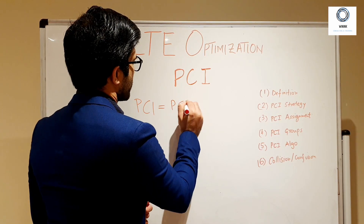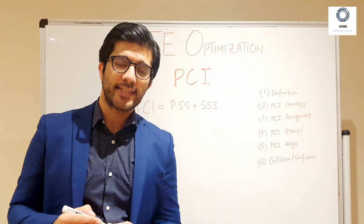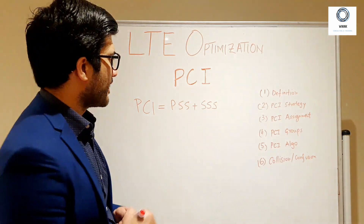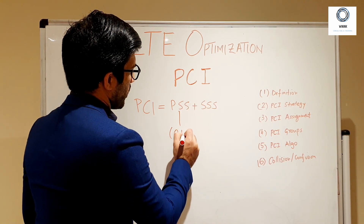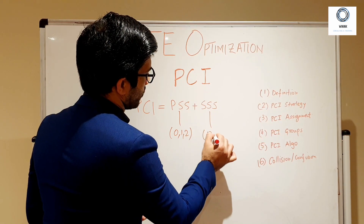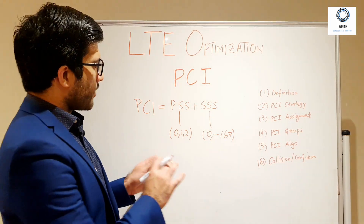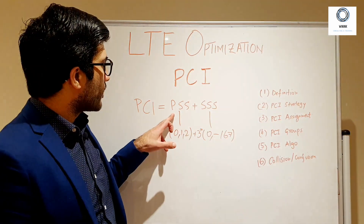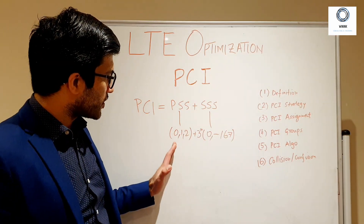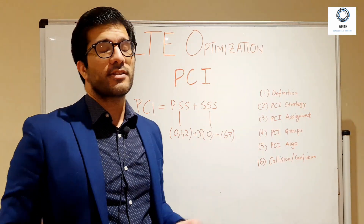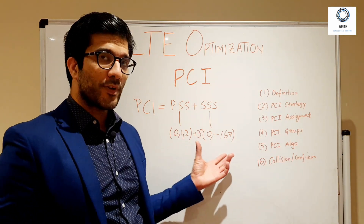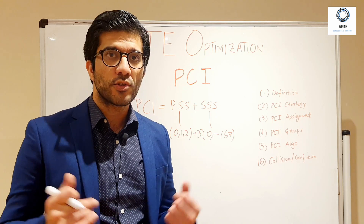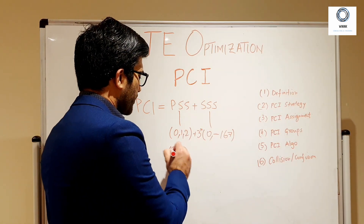PCI basically consists of two elements: your PSS plus your SSS. PSS is your Primary Synchronization Signal and SSS is your Secondary Synchronization Signal. PSS is denoted by 0, 1, or 2, and SSS is any number between 0 and 167. For any particular PCI, you choose one number from 0, 1, or 2 for PSS, and then a number between 0 and 167 for SSS, and multiply by 3. The sum of these two figures gives you your PCI.